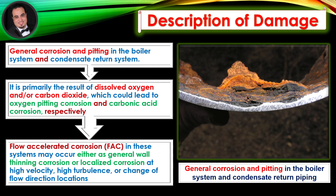Description of damage. General corrosion and pitting in the boiler system and condensate return system, as shown in figure. It is primarily the result of dissolved oxygen and/or carbon dioxide, which could lead to oxygen pitting corrosion and carbonic acid corrosion, respectively.